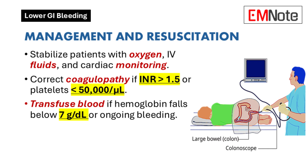Nasogastric tube placement may aid in identifying upper gastrointestinal sources in patients with significant bleeding or anemia. Early consultation with surgical and gastroenterology specialists is advisable for patients with severe or ongoing bleeding.